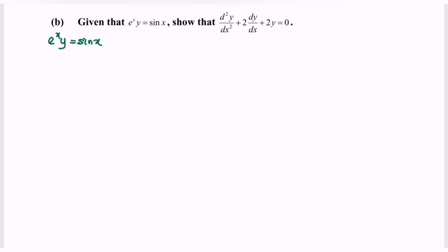Do remember the formula for the product rule: y prime equals v multiplied with u prime, plus u multiplied with v prime. Kindly focus on this part where we identify u and v.